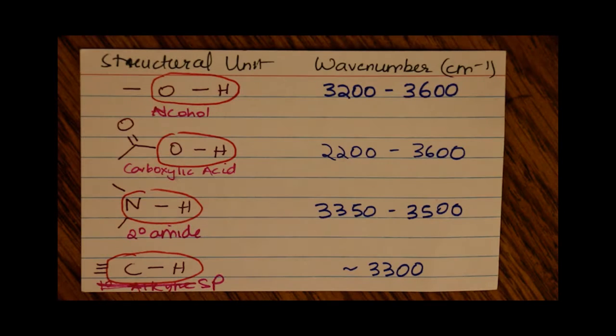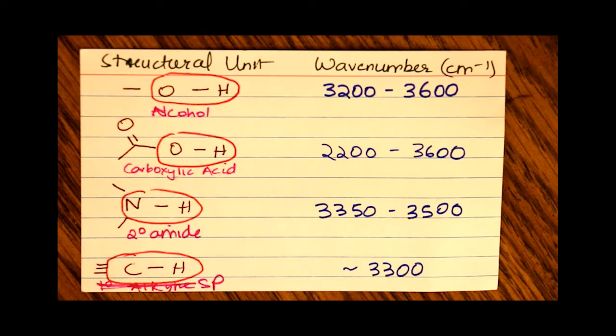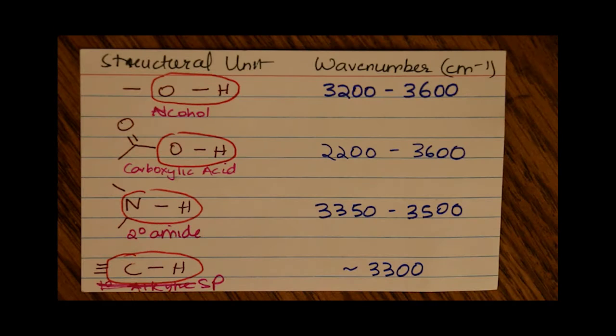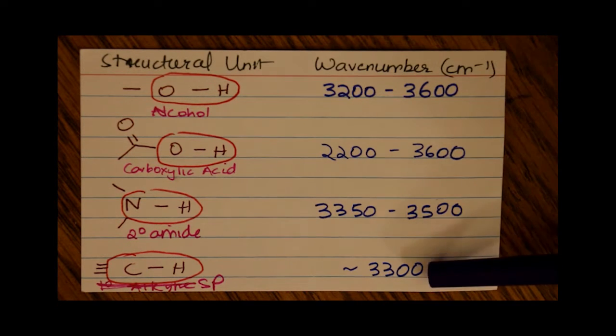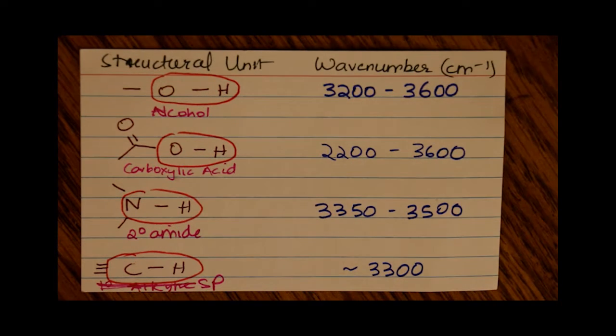The C-H bond in a primary alkyne: for an sp-hybridized carbon in a primary alkyne bonded to a hydrogen, the range is approximately 3300 inverse centimeters.